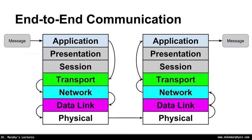What we end up with is an end-to-end communication system that looks like this. The message goes to the application layer of the transmitting system. We skip over the presentation and session layers because we don't use them in practice. The message goes to the transport layer, the network layer, the data link layer, and finally out on the physical layer. At the other end, it is extracted from the physical layer to get data link frames, then network layer datagrams, then transport layer structures. Finally, the application layer extracts the message, and we get the message from point A to point B.